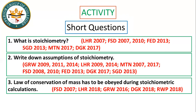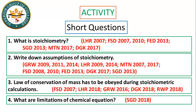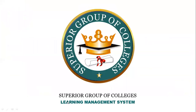Another short question frequently asked: 'What are the limitations of chemical equations?' — this appeared in 2018. In the next lecture, we will solve examples 11 and 12 related to stoichiometry. Thank you very much.